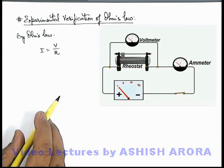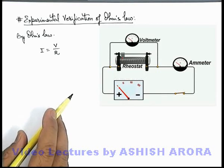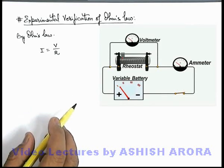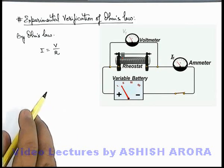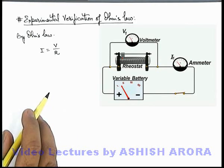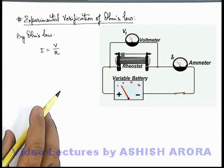Now in this situation, we can change the battery potential difference and we can measure the current and voltage across the resistance and plot a graph. Here in this situation, if we keep the resistance at a specific value R1,